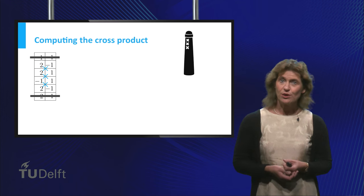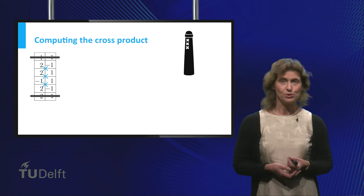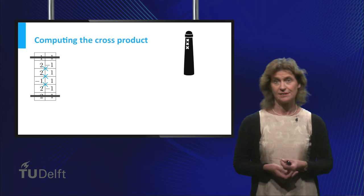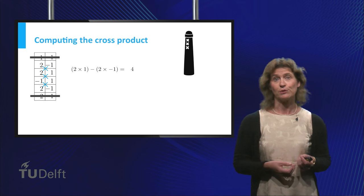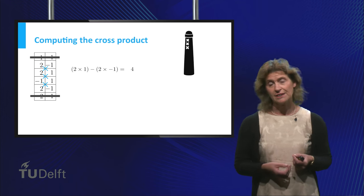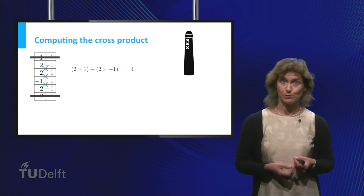Now compute the three components of the new vector w using the crosses in the table. Each cross means upper left multiplied with lower right minus lower left multiplied with upper right.